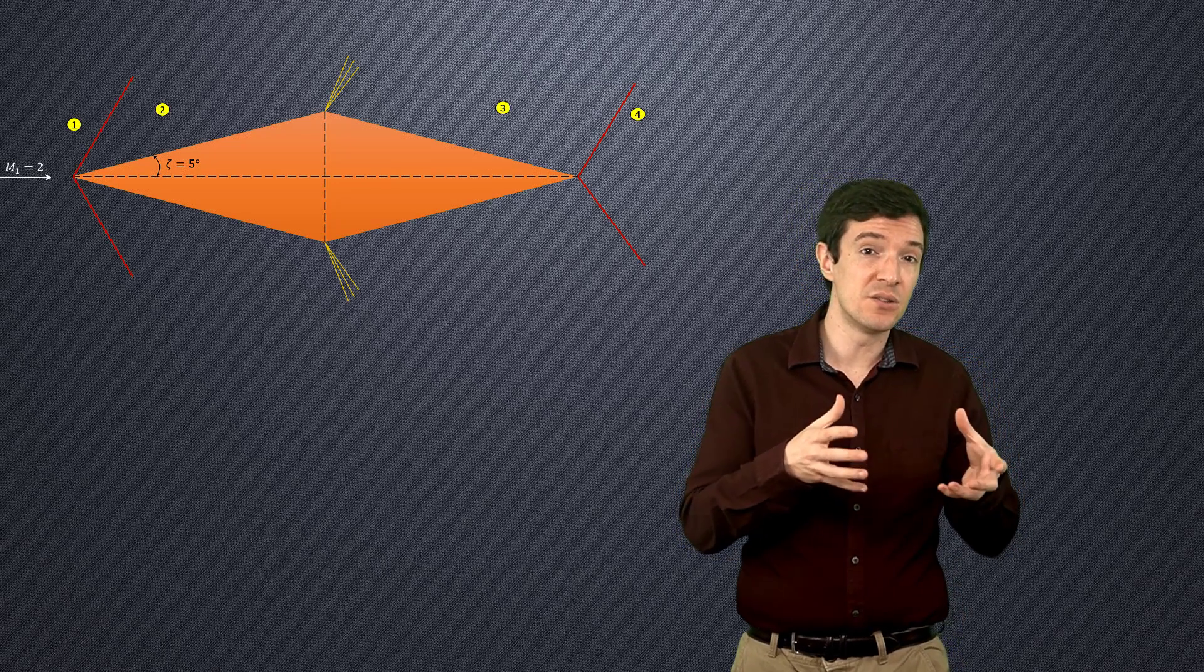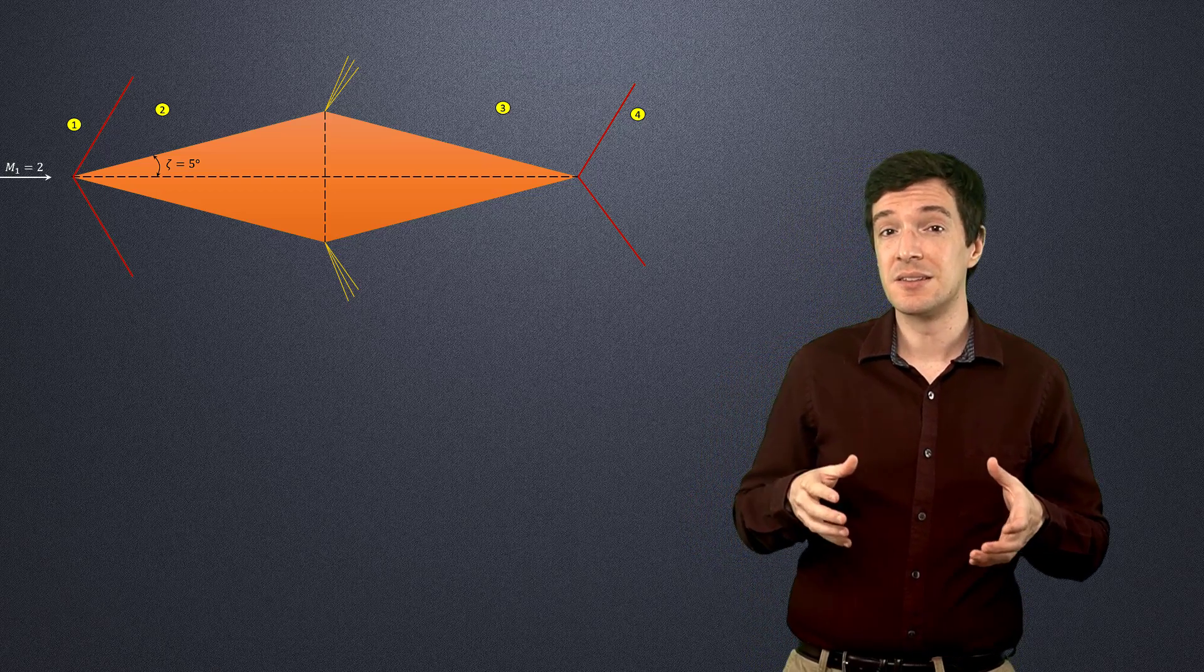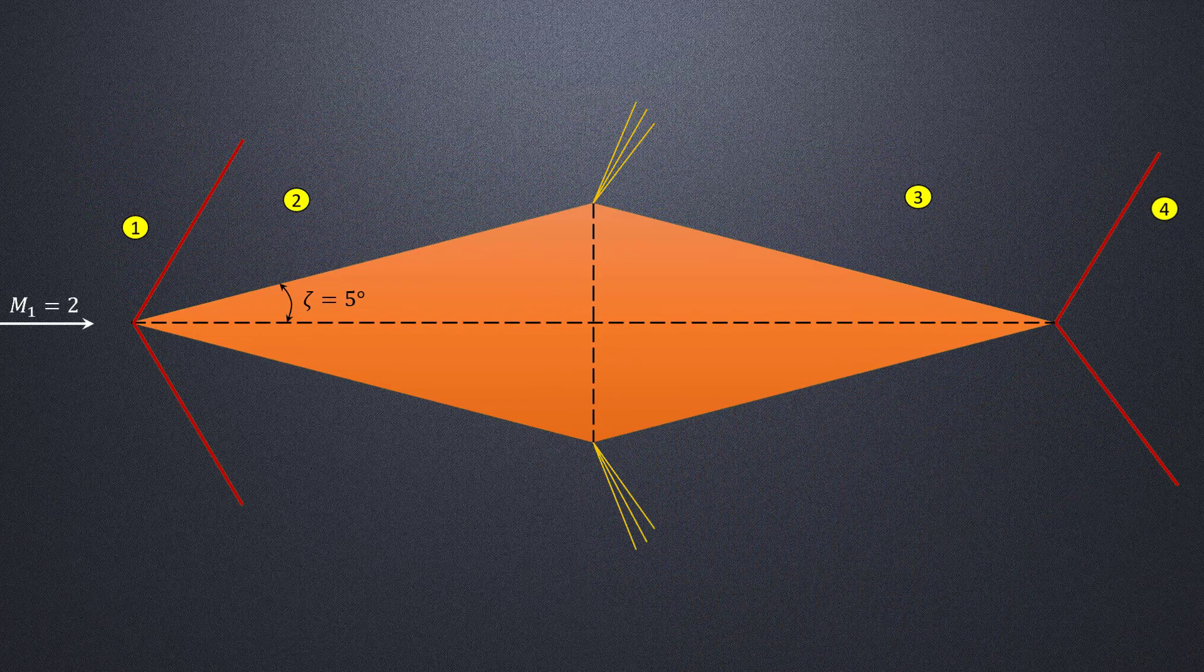Now that we understand the fluid flow behavior over a supersonic diamond airfoil, let's see how we can calculate lift and drag for this airfoil. We will do this through an example, in which we will assume that the supersonic freestream Mach number is 2, and the deflection angle is 5 degrees. Before we calculate lift and drag, we need to estimate the pressure and Mach numbers in the different regions.